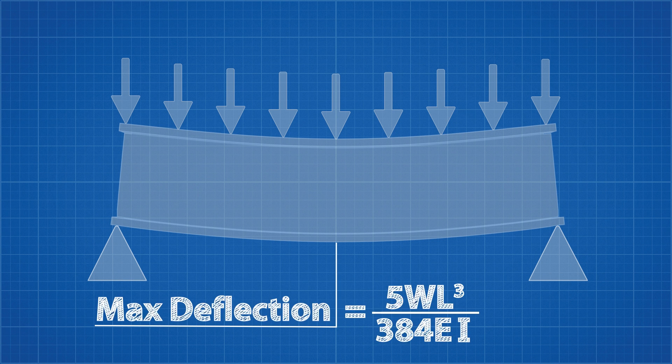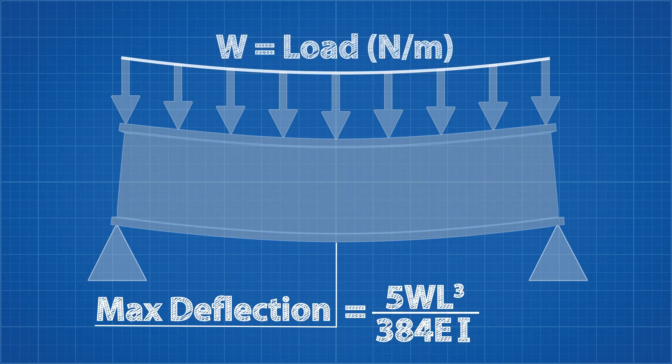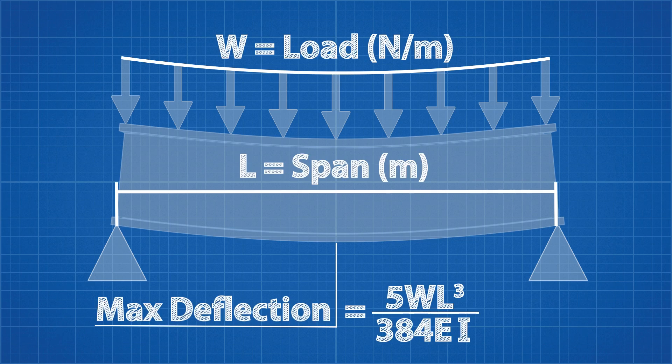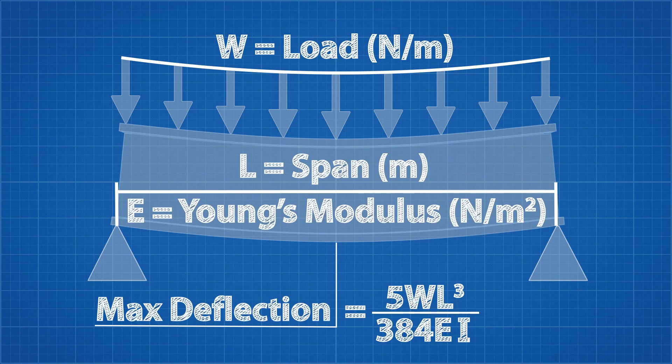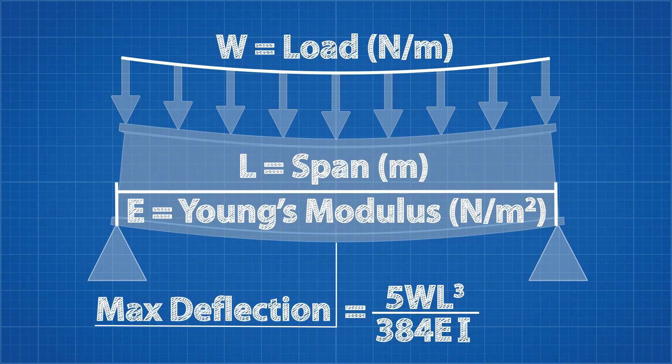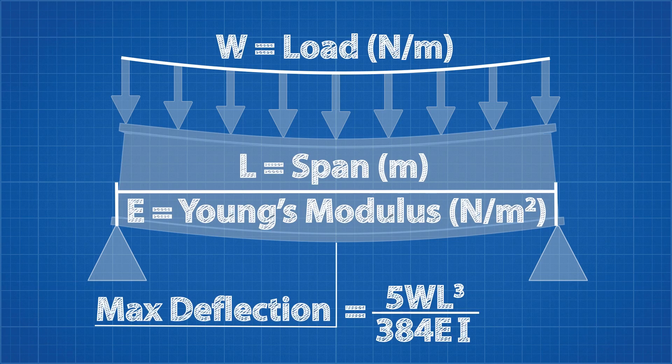This may look complicated, but it really isn't. W represents the uniformly distributed load in terms of newtons per meter. L is the span between supports. E is the Young's modulus, which as explained in my material properties 101 video, describes the stiffness of the material.